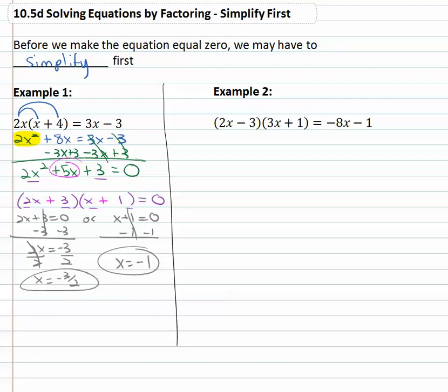Let's look at another example, this one looks pretty involved, 2x minus 3 times 3x plus 1 equals negative 8x minus 1. Again, if we're solving by factor we want to make it equal to zero, but before we do that we have to do a little clean up work. On the left side, we have to multiply out everything here because it's not any use to us to be factored if it doesn't equal zero.